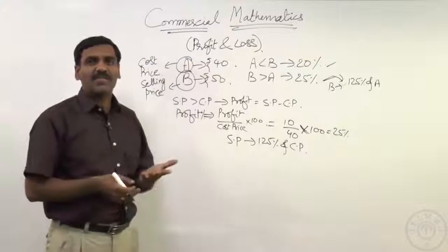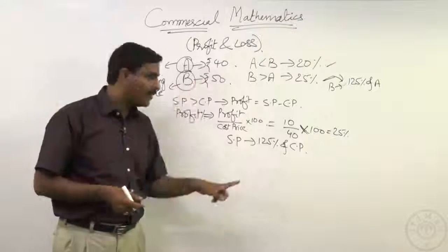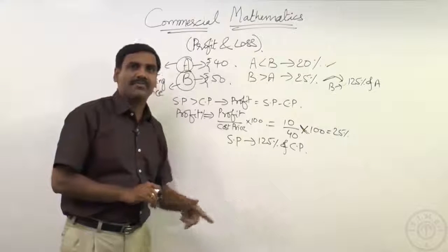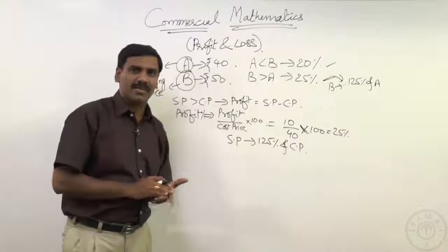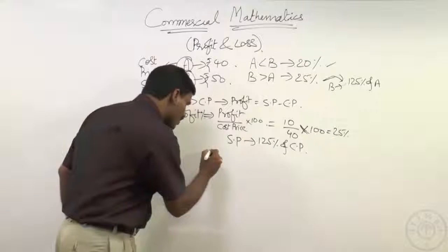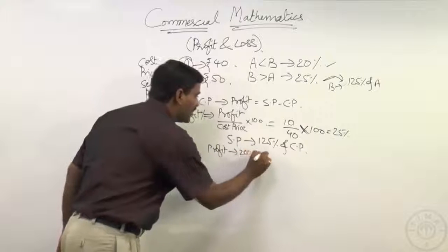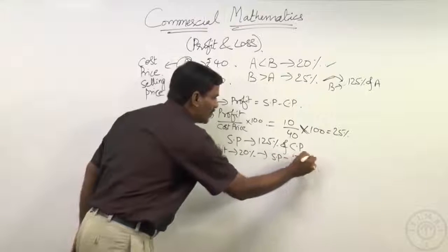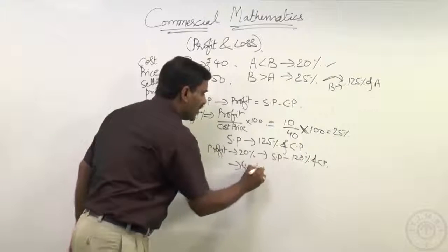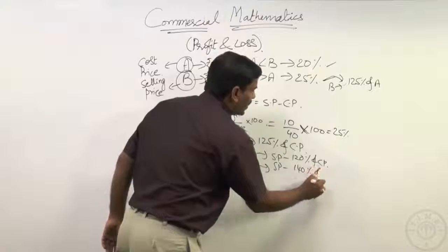Instead of 25 percentage profit, if it is 40 percentage profit, using the same logic it becomes 100 plus 40 — 140 percentage of cost price. If there is a profit of 20 percentage, it will become 120 percentage of cost price. If there is a profit of 50 percentage, it will be 150 percentage of cost price. So in that way: profit 20% → SP = 120% of CP; profit 40% → SP = 140% of CP.